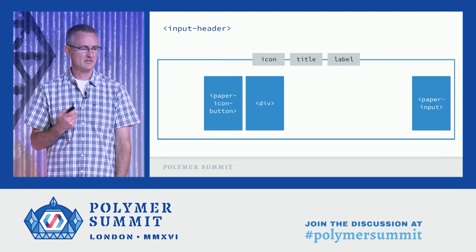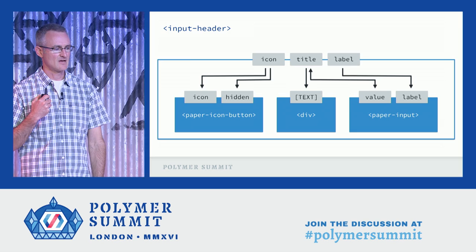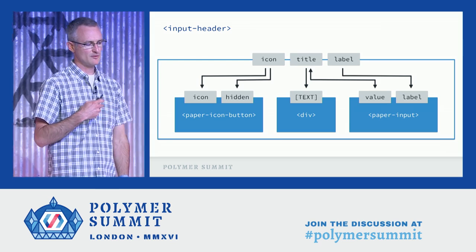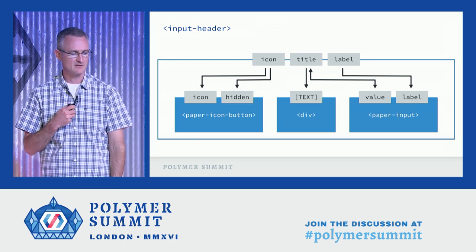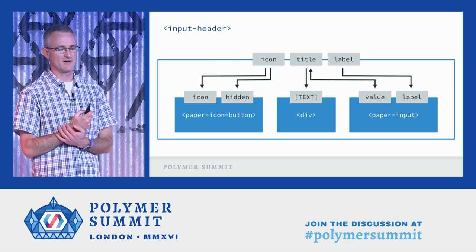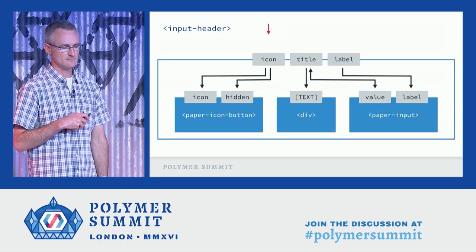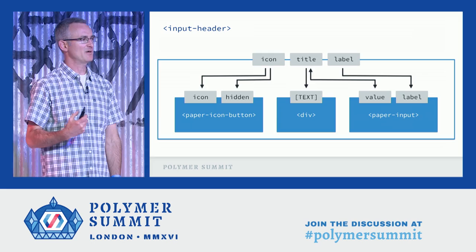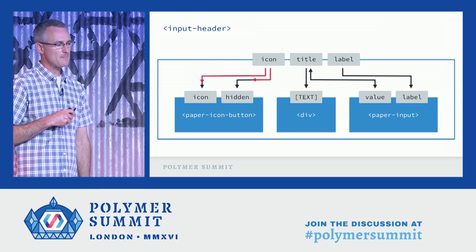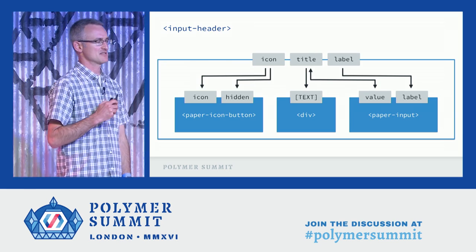If we want to think critically about data flow, it's important to understand how Polymer's data features work and how they impact performance and code complexity. Let's visualize how data actually flows through the input header as specified by its bindings. Input header contains a bunch of elements, but only three are directly involved in data flow, so we can simplify our diagram. We have arrows representing all of the bindings in the model, including the one two-way binding between the title property and the value property of paper-input.